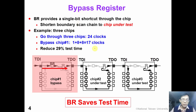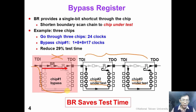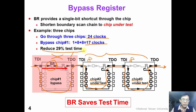Here is an example. Suppose on this board we have three chips: chip number two and chip number three are tested, so they are called chips under test. However, chip number one is not tested by JTAG. If we want to go through all 24 boundary scan cells, we would need 24 clocks. However, if we use the bypass register of chip number one, we can simply use one cycle plus eight plus eight, which is 17 clock cycles. In this way we can reduce 29 percent of our test time. So the bypass register helps us save test time.